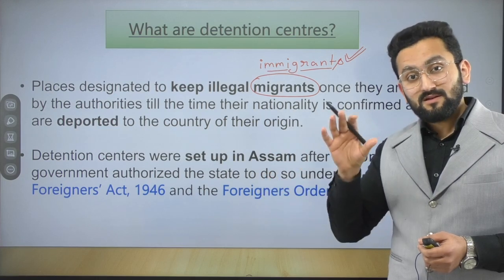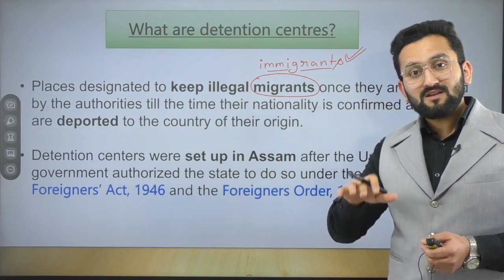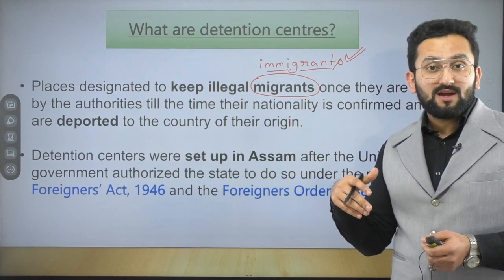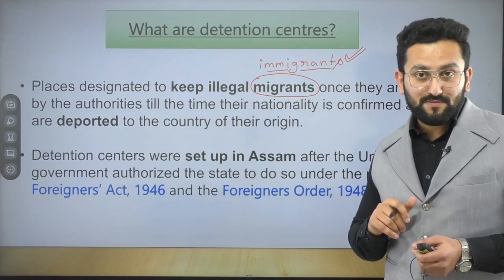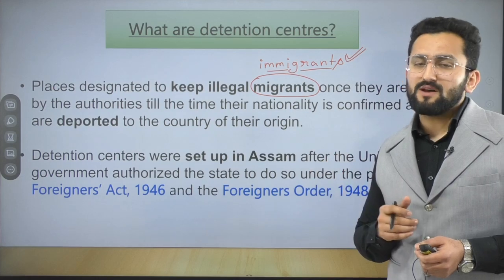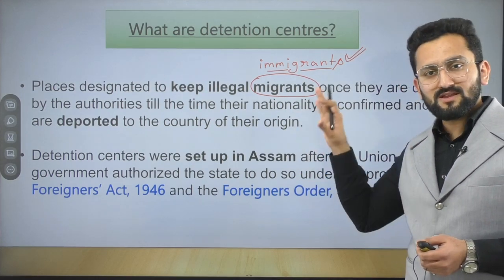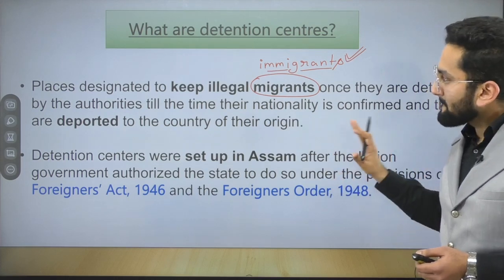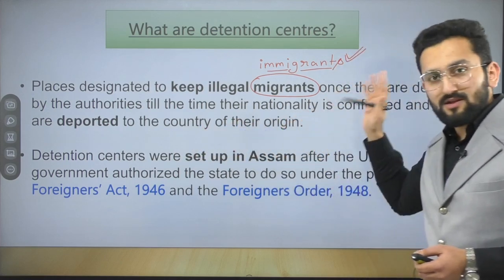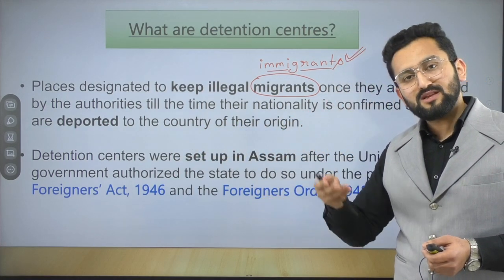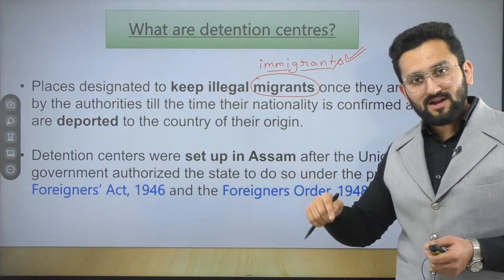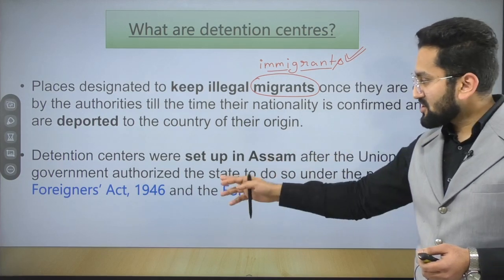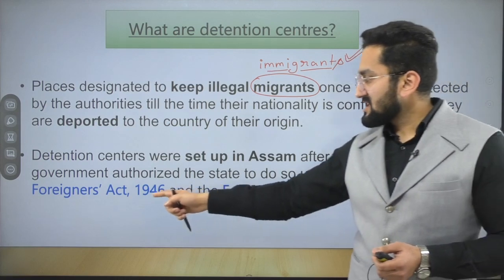The NRC means there will be a proper record of citizens of India. Those who fail to prove that they are citizens of India will be sent to these detention centers. They are first lodged in the detention center, then there are legal proceedings, and they may be deported to their respective country — meaning our administration will talk to that particular country. Detention centers were set up in Assam after the Union Government authorized the state to do so under the provisions of the Foreigners Act 1946.